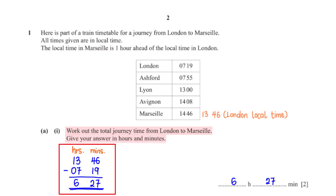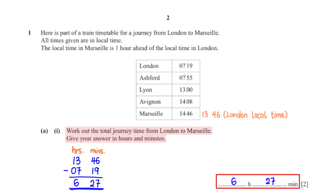To get the time duration for the journey, we subtract the departure time in London from the arrival time in Marseille. Note that when it's 14:46 in Marseille, the local time in London is 13:46. In the minutes column, when we subtract 19 from 46, we get 27. In the hour column, when we subtract 7 from 13, we get 6. So the time duration is 6 hours 27 minutes.